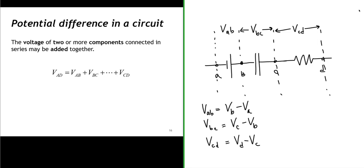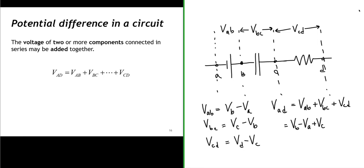The voltage of two or more components connected in series may be added together. So if we wanted to know the total voltage from A to D, we would just add up the voltage from A to B, plus the voltage from B to C, plus the voltage from C to D — that is, the voltage at B minus A, plus C minus B, plus D minus C.